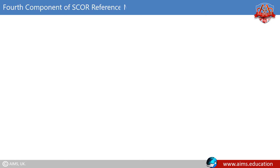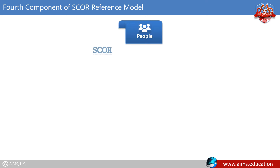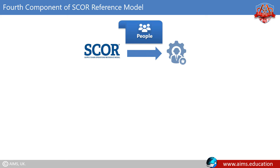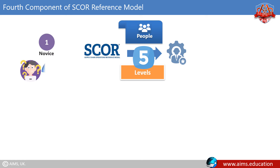The fourth component of the SCOR reference model is People. SCOR incorporates a standard for describing skills and recognizes five commonly accepted competency levels. The first is Novice — an untrained beginner with no experience who requires and follows detailed documentation. The second is Beginner — performs the work with limited situational perception.